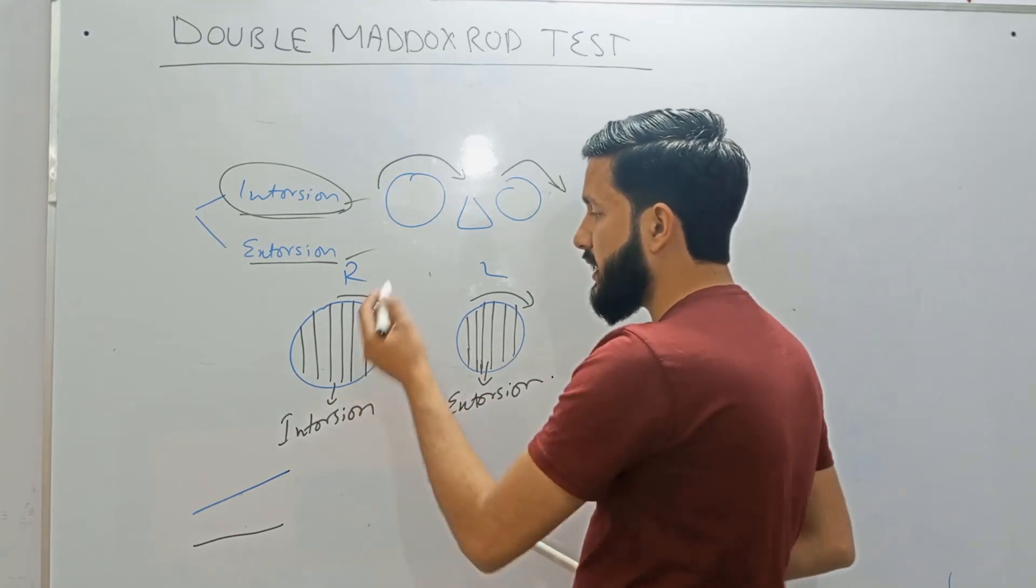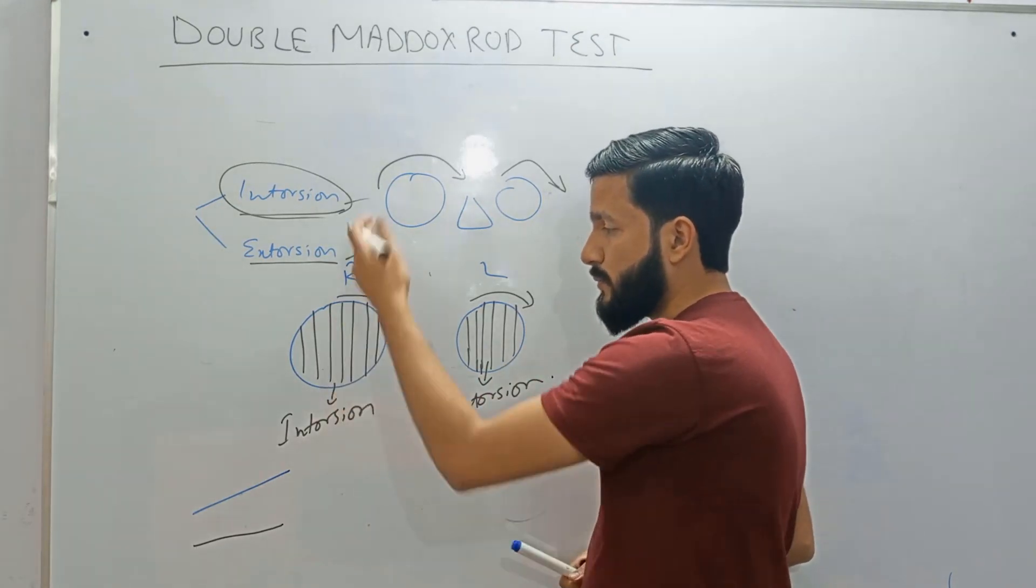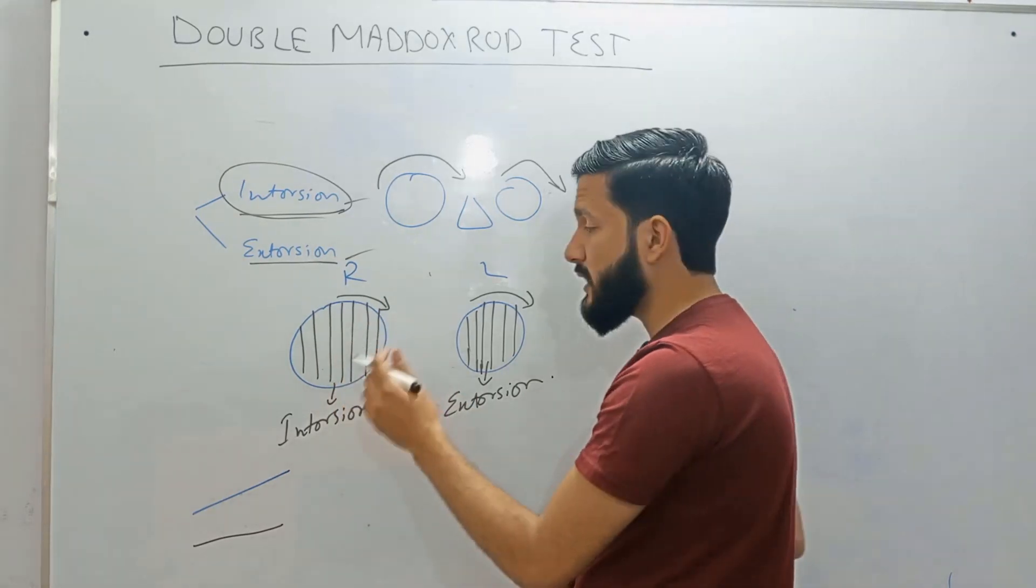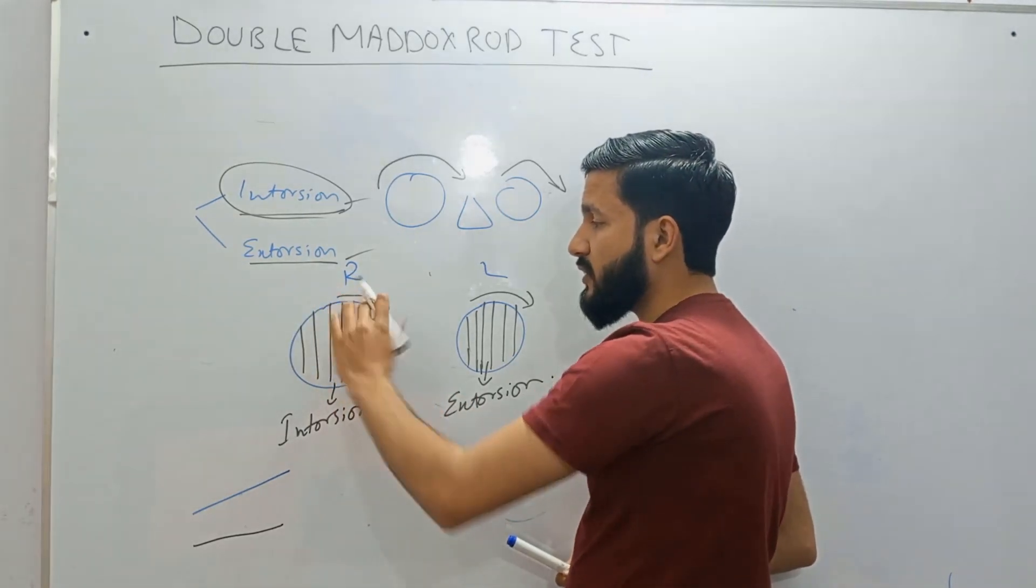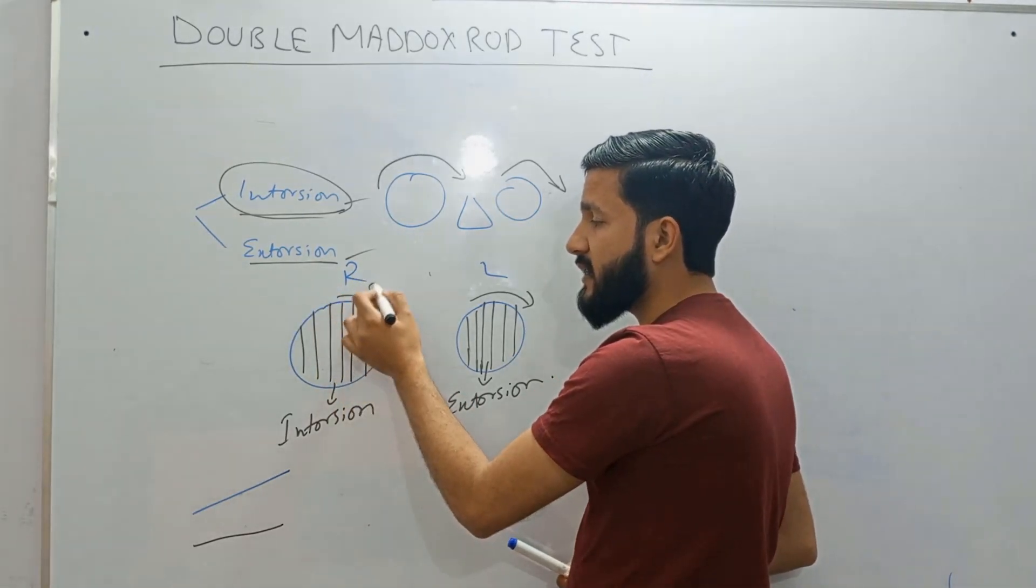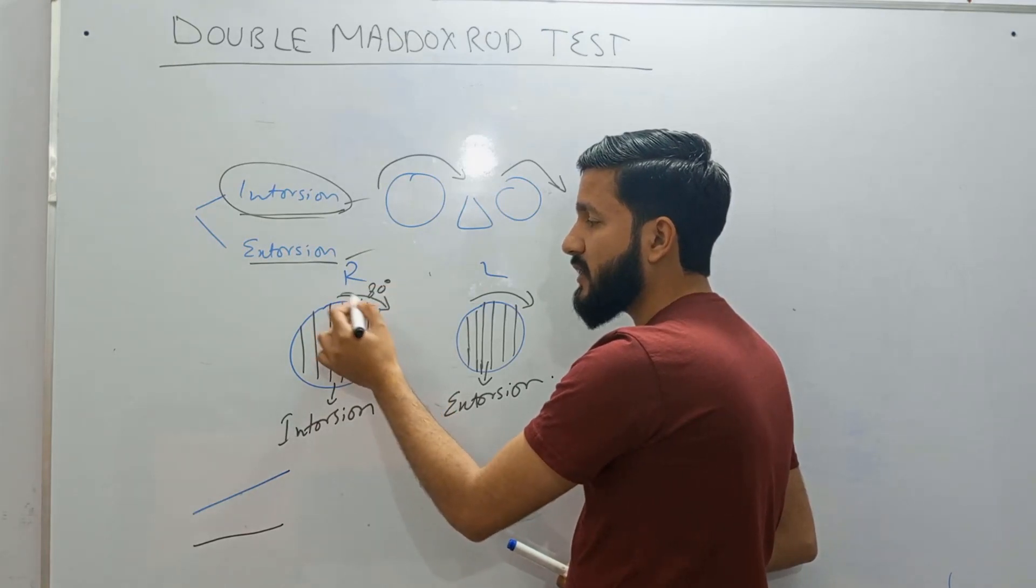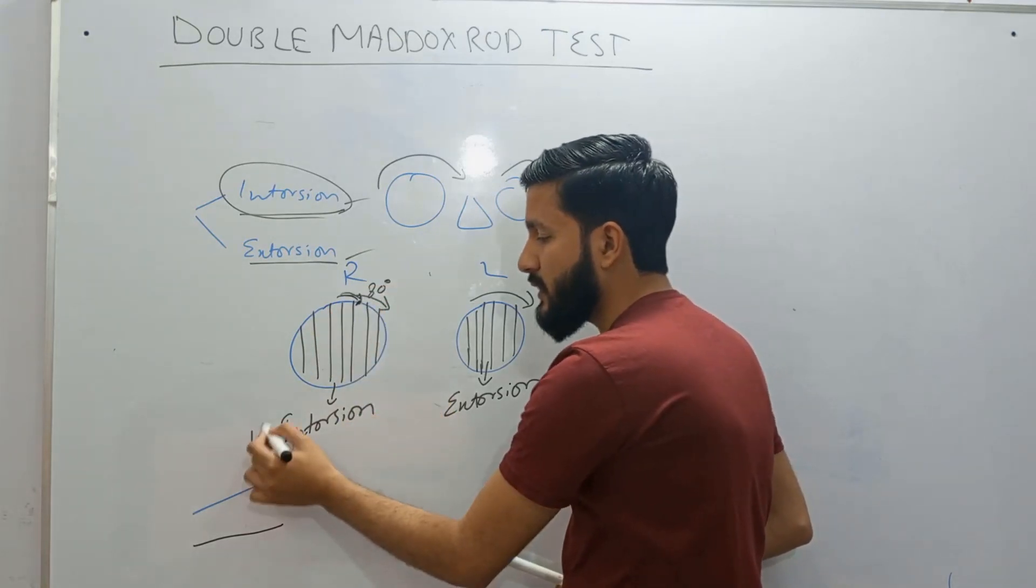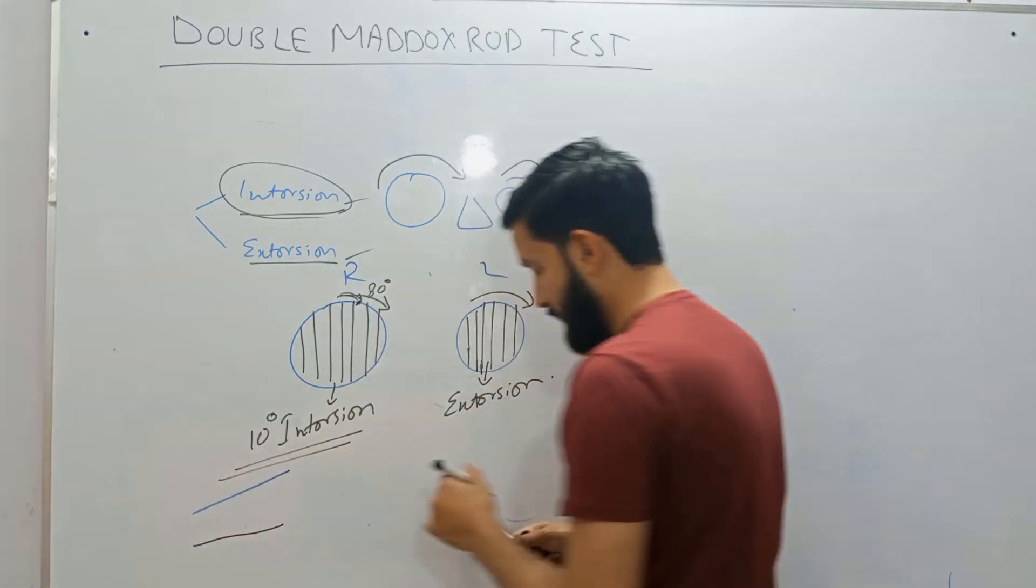And you can measure the degree. Let's suppose it was present initially on 90 degrees. And if the patient rotates Maddox rod and you read the reading, it becomes 80 degrees, then it indicates that there is a 10 degree of intorsion.